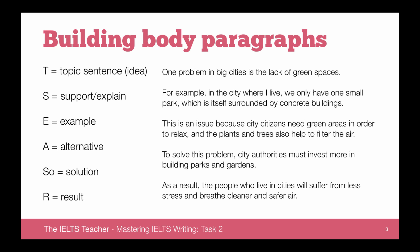The first sentence is always going to be a topic sentence. This will contain your general idea for the paragraph. It's very important that this sentence is nice, clear, and concise — not too long — and very clearly shows what you're going to be talking about in the paragraph. For example, in a problem and solution essay: 'One problem in big cities is the lack of green spaces.' Very, very clear.